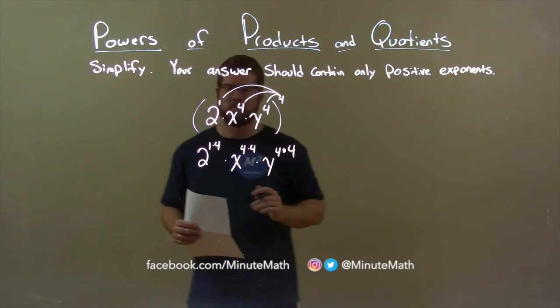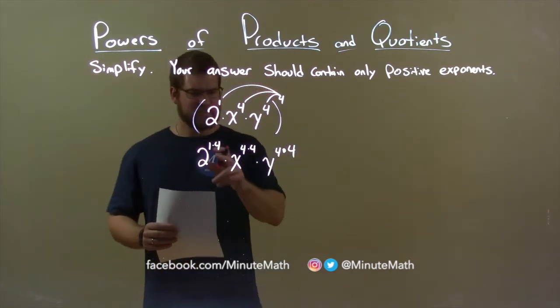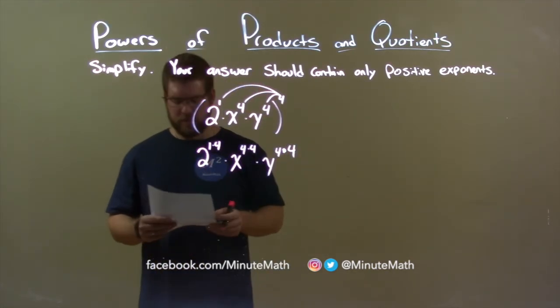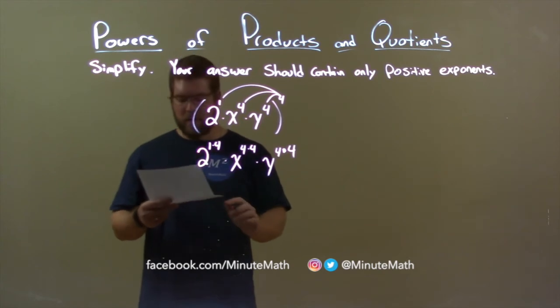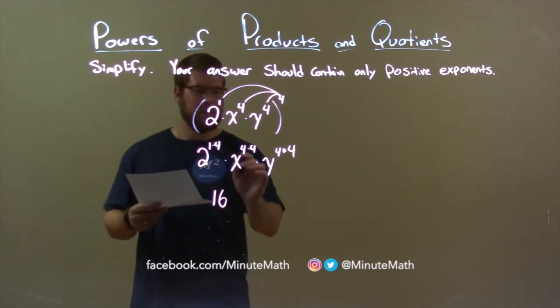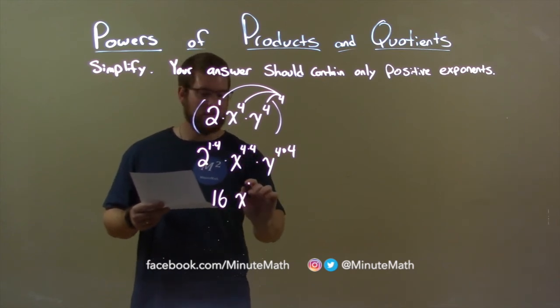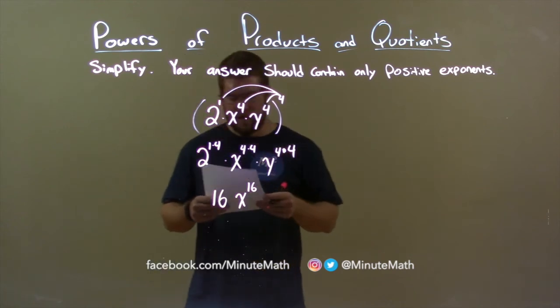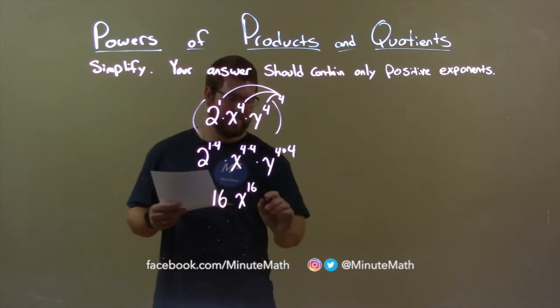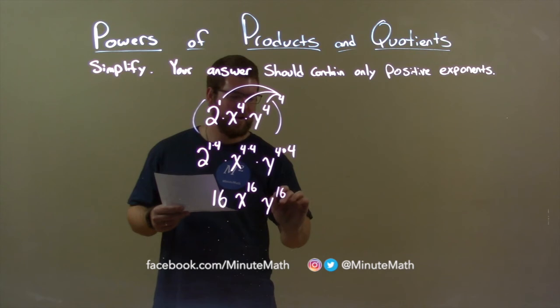So, now let's simplify. Pretty easy now. 1 times 4 is 4, and 2 to the fourth power is 16. 4 times 4, again, is 16. So, we have x to the sixteenth power now. And lastly, 4 times 4, again, is y to the sixteenth power,